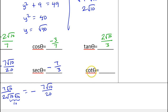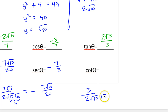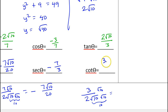For cotangent, if I take the reciprocal of tangent, I get 3/(2√10). You're not allowed to keep this as is, so we rationalize the denominator. Multiplying by √10/√10: √10 × √10 = 10, and 2 × 10 = 20. So I get 3√10/20. That's it for number 19.